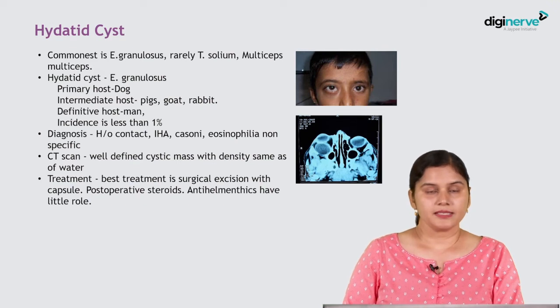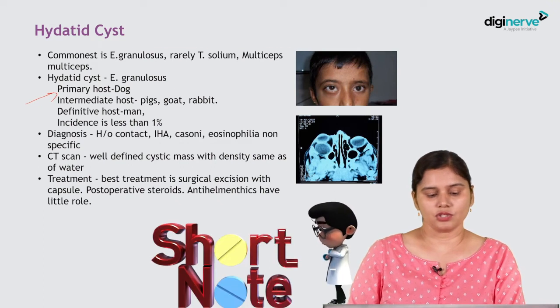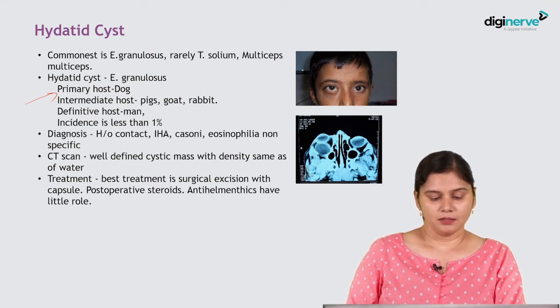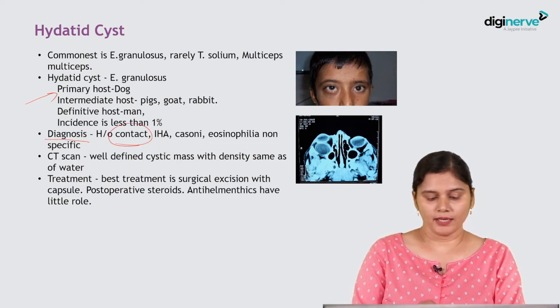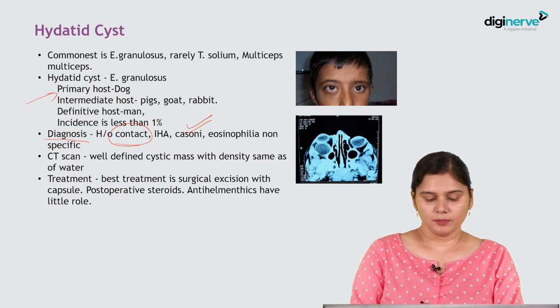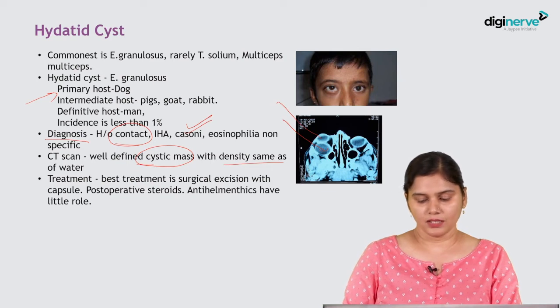Hydatid cyst is formed due to Echinococcus granulosus. The primary host of Echinococcus granulosus is the dog, and man acts as the intermediate host, leading to hydatid cyst formation. There is a history of contact and the Casoni's test is usually positive. On CT scan, a cystic mass is seen with a density similar to that of water. The best treatment is surgical excision with postoperative steroids and anti-helminthics.